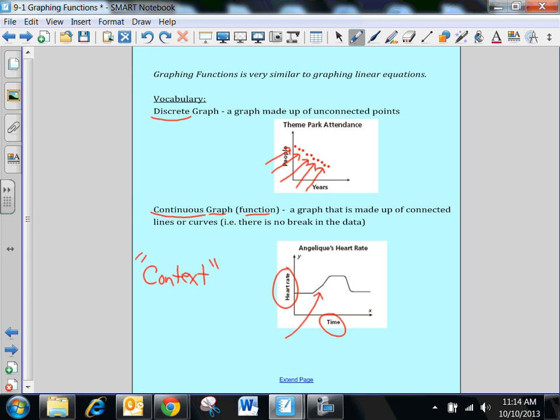In the case of the first example with people in years, theme park attendance, people in years, that's very discrete. You either have 307 people or 412 people, but you don't have 407.3 people. So you have an exact number. It's what we call discrete.